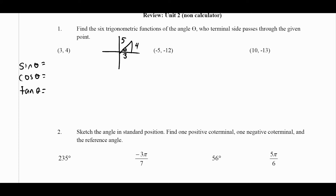I look at the triangle and use that as a guideline to figure out sine, cosine, and tangent. Sine is opposite over hypotenuse, cosine is adjacent over hypotenuse, and tangent is opposite over adjacent — remember that SOHCAHTOA. We can also write it as the y-value over r, the x-value over r, and y over x.